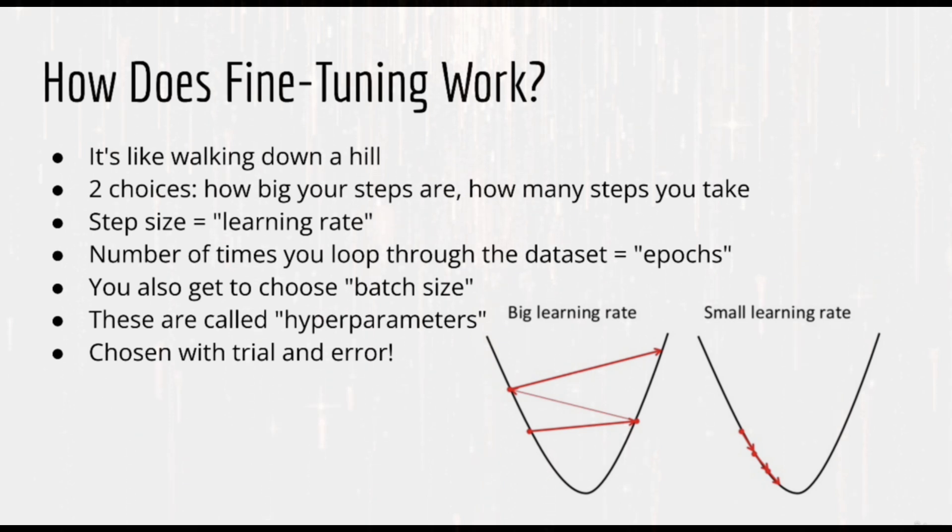How big your steps are is called the learning rate. If your steps are too big, you might never converge, and even make your model worse. If your steps are too small, your model might not get worse, but it will fail to converge and not achieve the desired result.